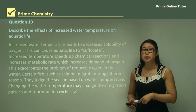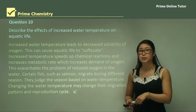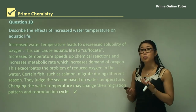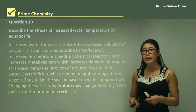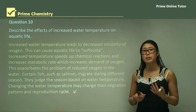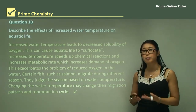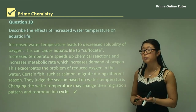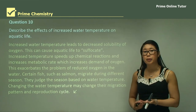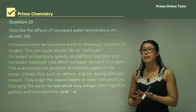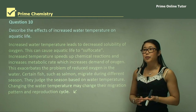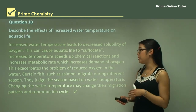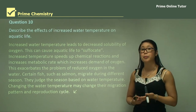In summary, thermal pollution is a really bad thing and usually occurs from factories or other places that use water as a coolant to get rid of waste heat. When they release the waste heat it gets pumped into rivers and lakes, heating them up. This causes problems by decreasing available oxygen, increasing metabolic rate and oxygen consumption, and affecting aquatic life's reproduction cycle and migration patterns.